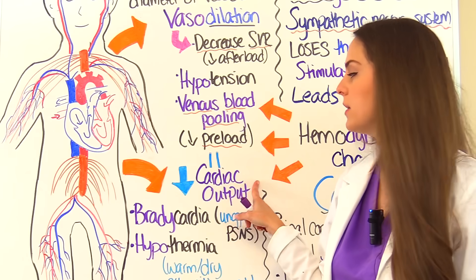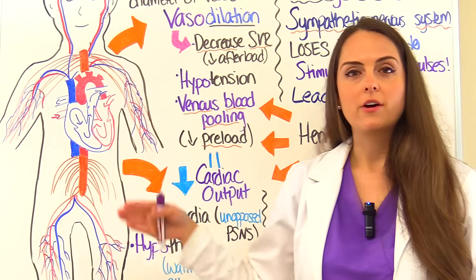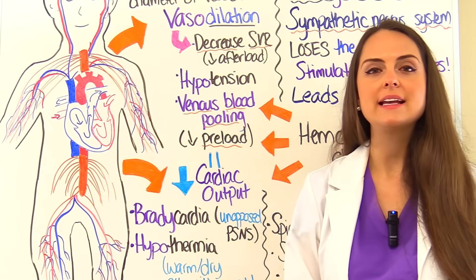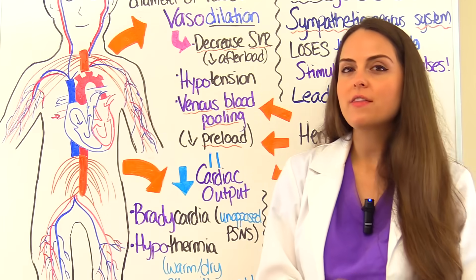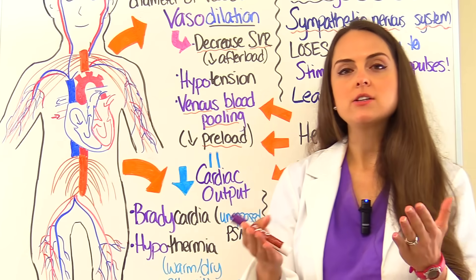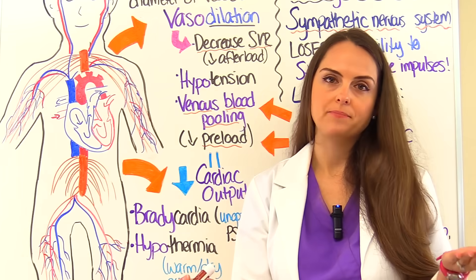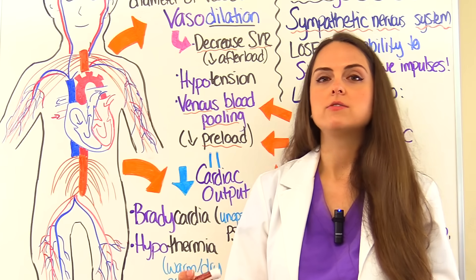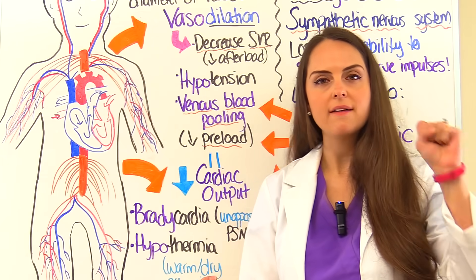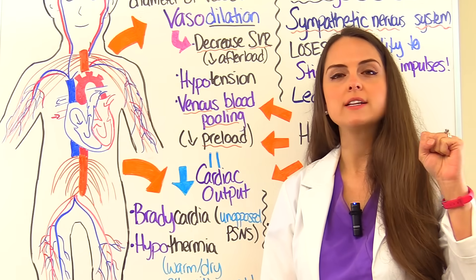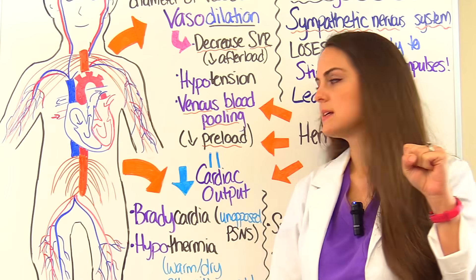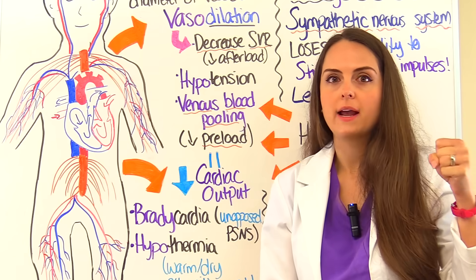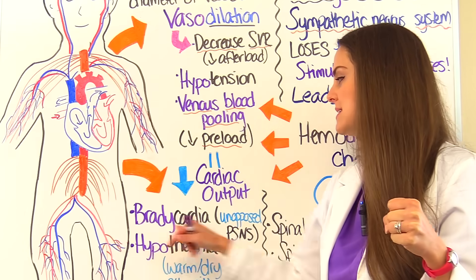Another thing affecting cardiac output is heart rate — remember, cardiac output is heart rate times stroke volume. These patients can experience bradycardia, where heart rate is less than 60. Why? Because with the sympathetic nervous system unable to function properly, the parasympathetic system takes over unopposed. The parasympathetic system keeps your heart rate nice and slow. Without the sympathetic nervous system to increase heart rate, the parasympathetic system simply does what it does, and we see bradycardia.